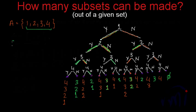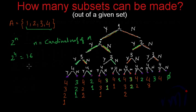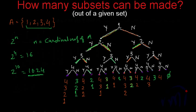So there are 16 possible subsets when there are 4 elements in the parent set. The total number of subsets possible is 2 to the power n, where n is the cardinal number of the set. 2 to the power 4 equals 16. If the cardinal number is 10, the total possible subsets will be 2 to the power 10, which equals 1024. For each element, there are only two possibilities: it can be present in the subset or it is not present.